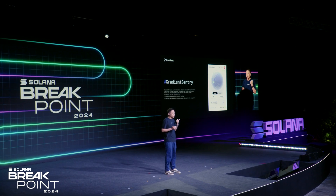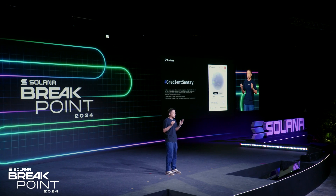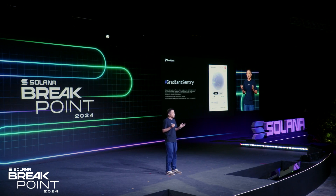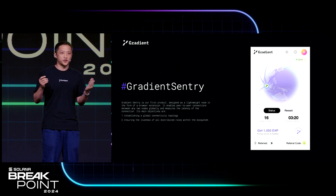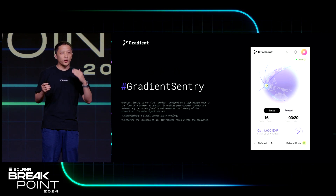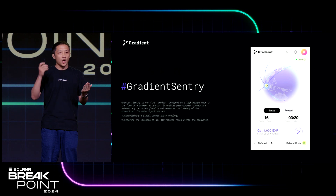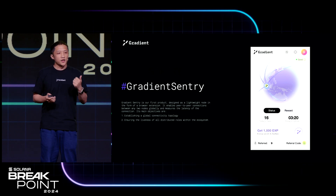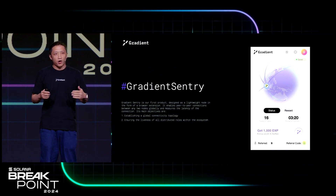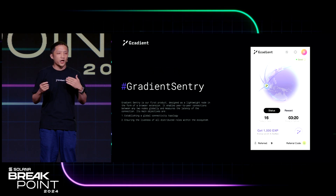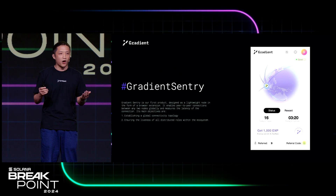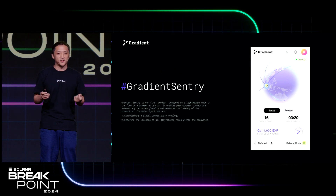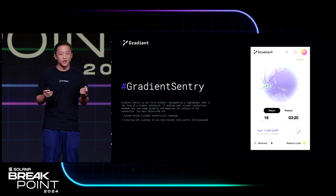It mainly serves two goals. First, we want to establish a global and local connectivity topology map, which will help us in the future when we want to orchestrate services and match processing power with users. Secondly, when our ecosystem grows, there will be a lot of decentralized roles in our ecosystem, and Sentry Node will help safeguard the liveliness of all those decentralized roles.